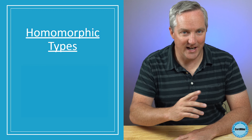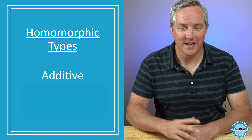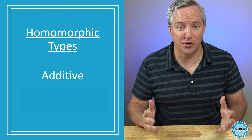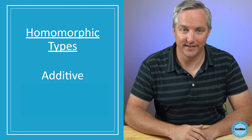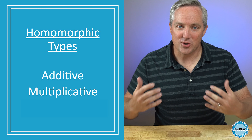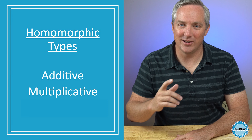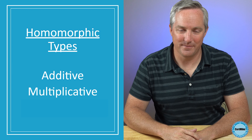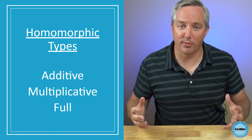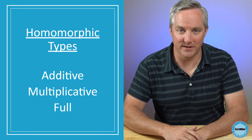There are a few different types of homomorphic encryption that you need to know about. Additive homomorphic encryption allows you to perform the addition operation on encrypted data — that's what we'd use in the voting example. There's also multiplicative homomorphic encryption, which allows you to multiply the results. And fully homomorphic encryption allows you to perform combinations of addition and multiplication on your encrypted data.